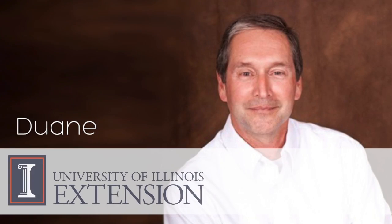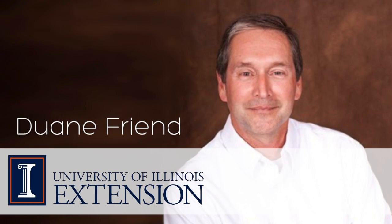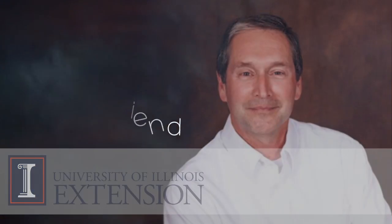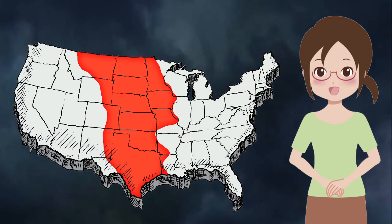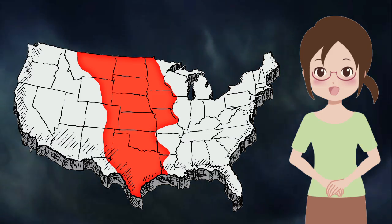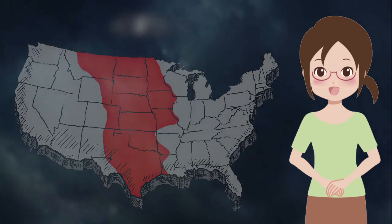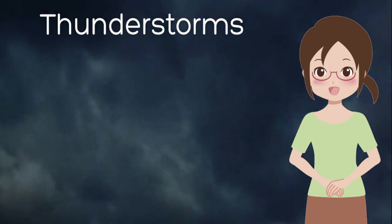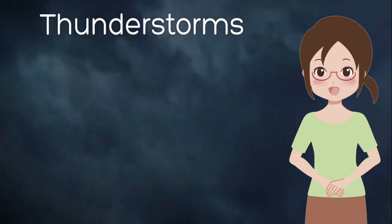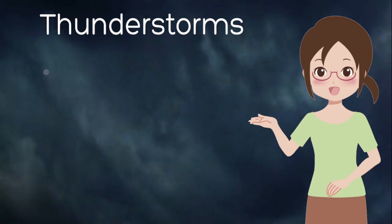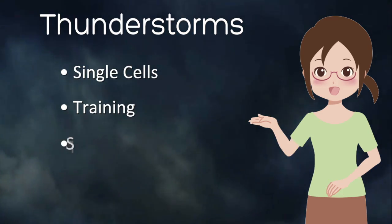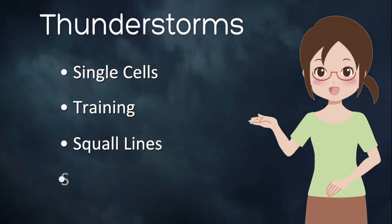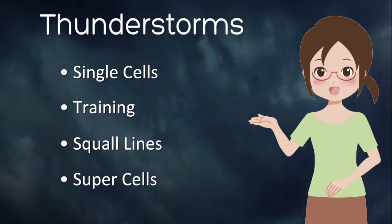This is Duane Friend with University of Illinois Extension. Everyone living in the central part of the United States has experienced a thunderstorm. Scientists have classified thunderstorms into four categories: single cell, training thunderstorms, squall lines, and supercells.